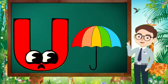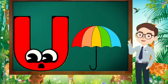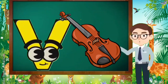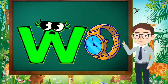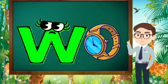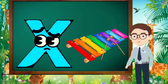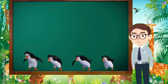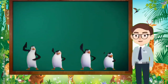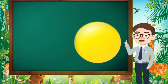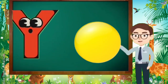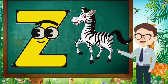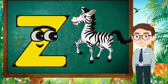U is for Umbrella, U-U-Umbrella. V is for Violin, V-V-Violin. W is for Watch, W-W-Watch. X is for Xylophone, X-X-Xylophone. Y is for Yellow, Y-Y-Yellow. Z is for Zebra, Z-Z-Zebra.